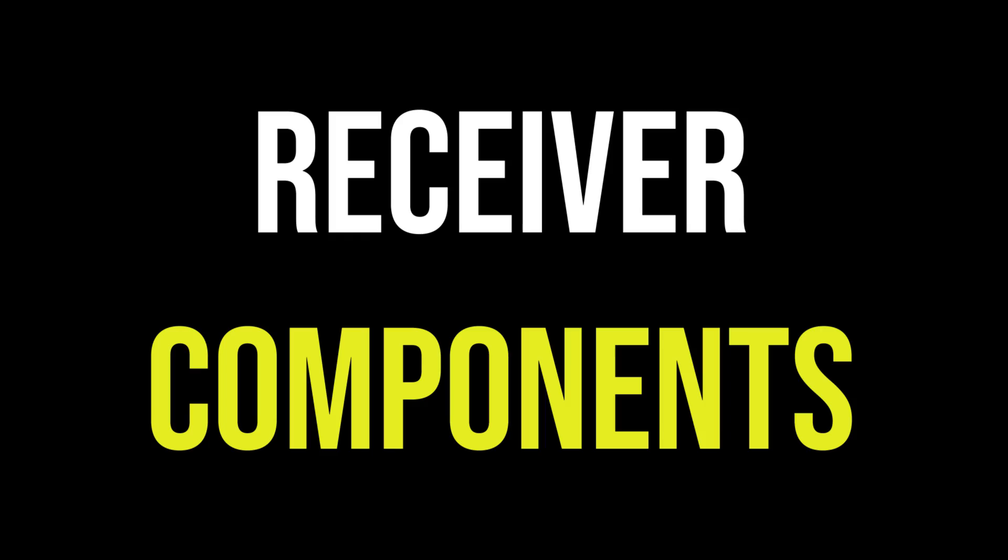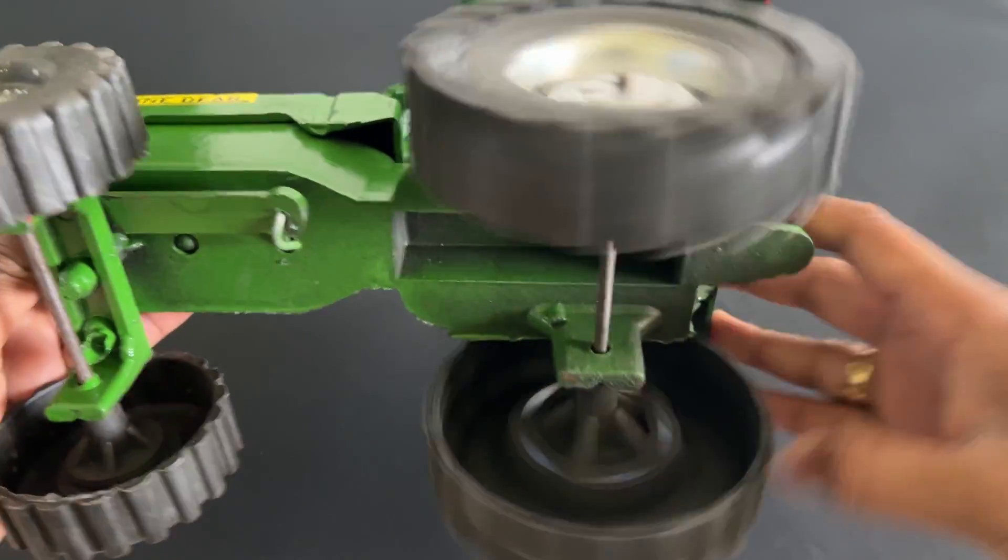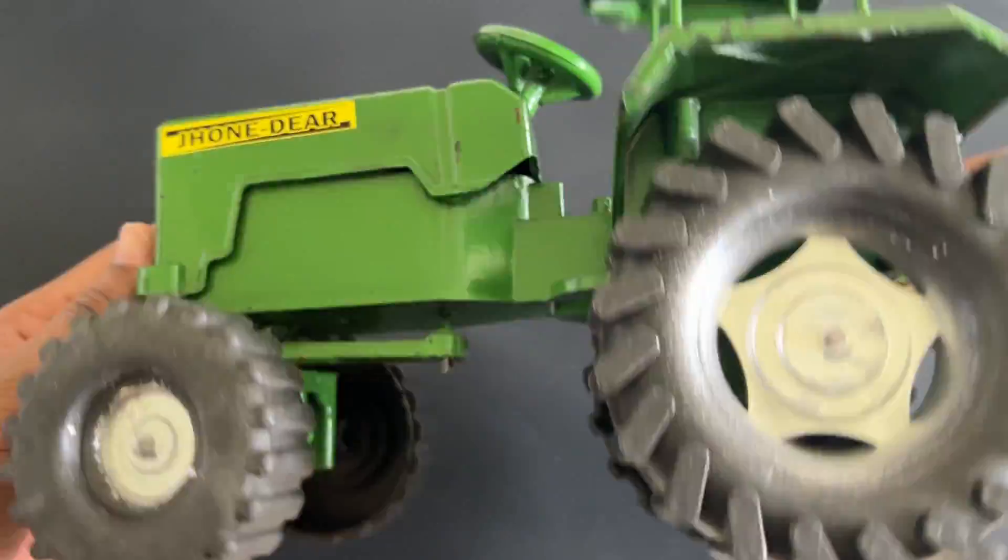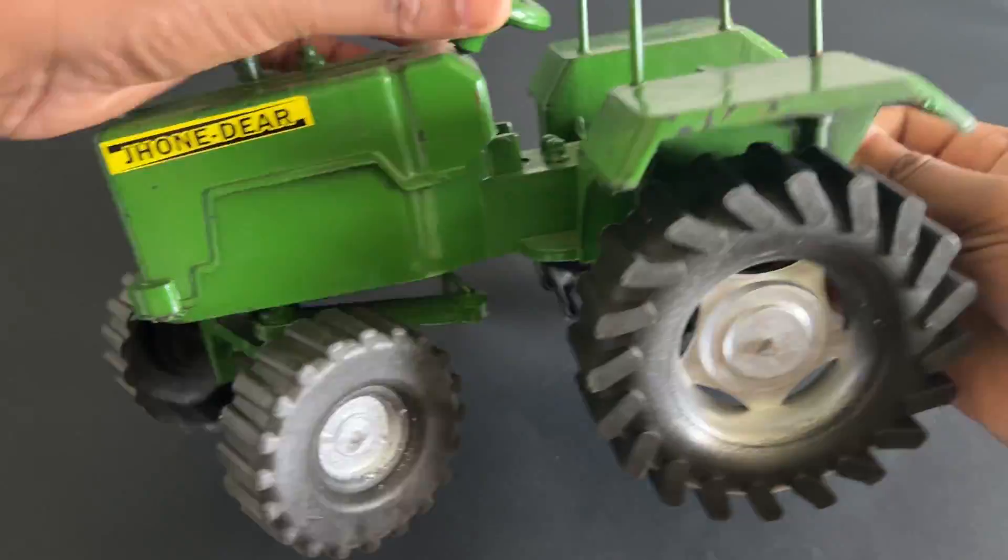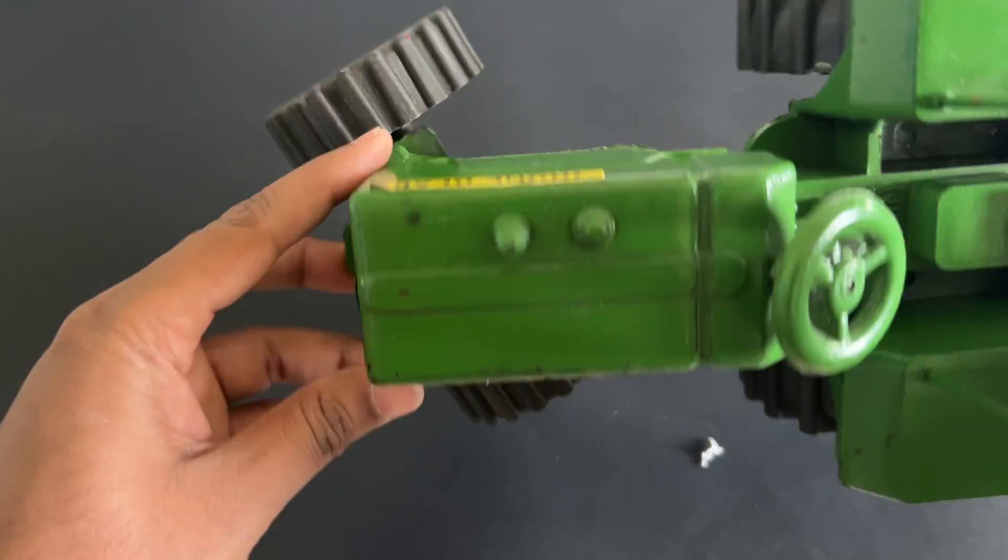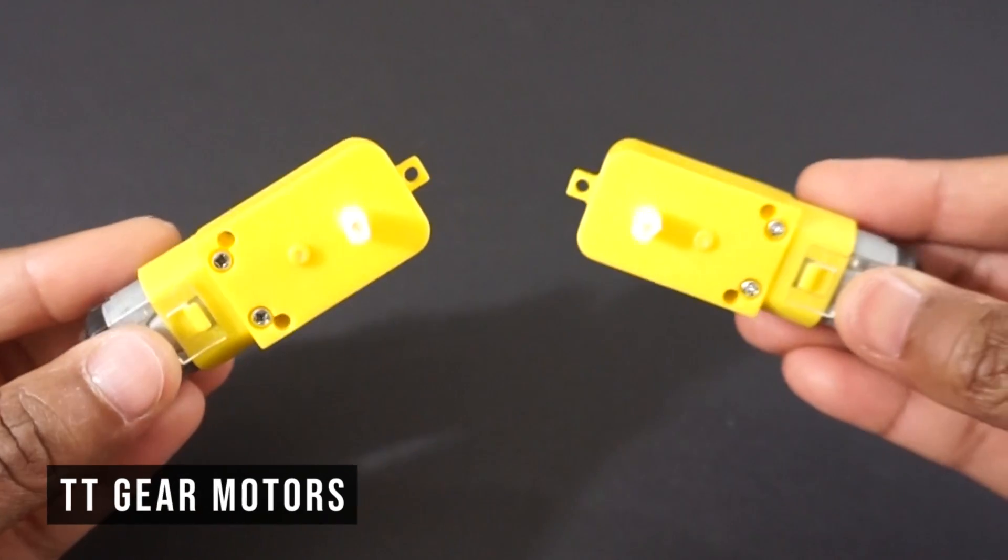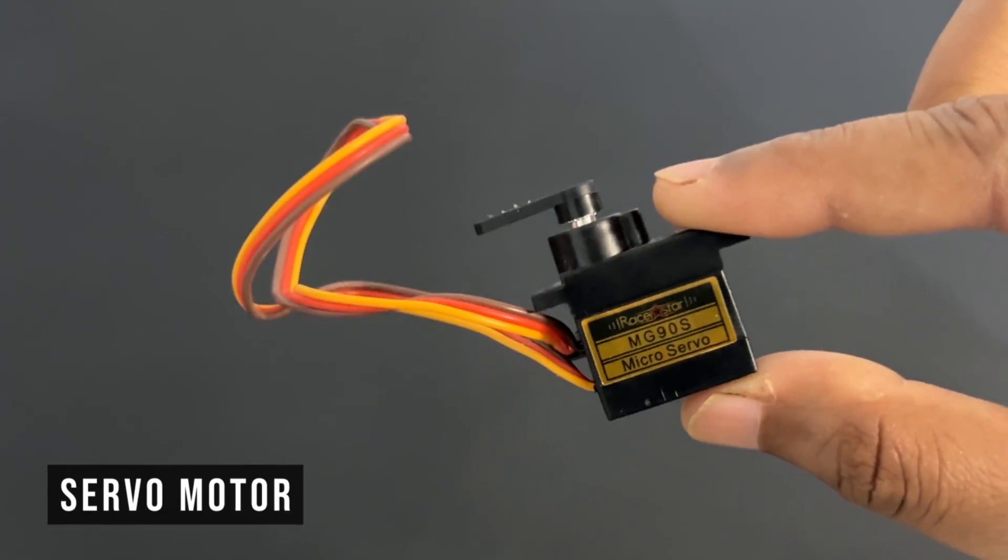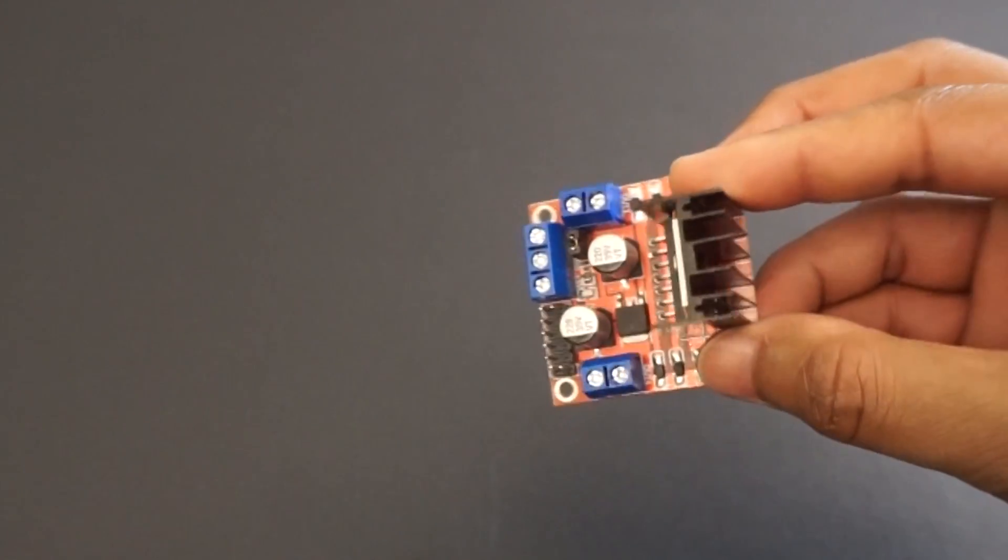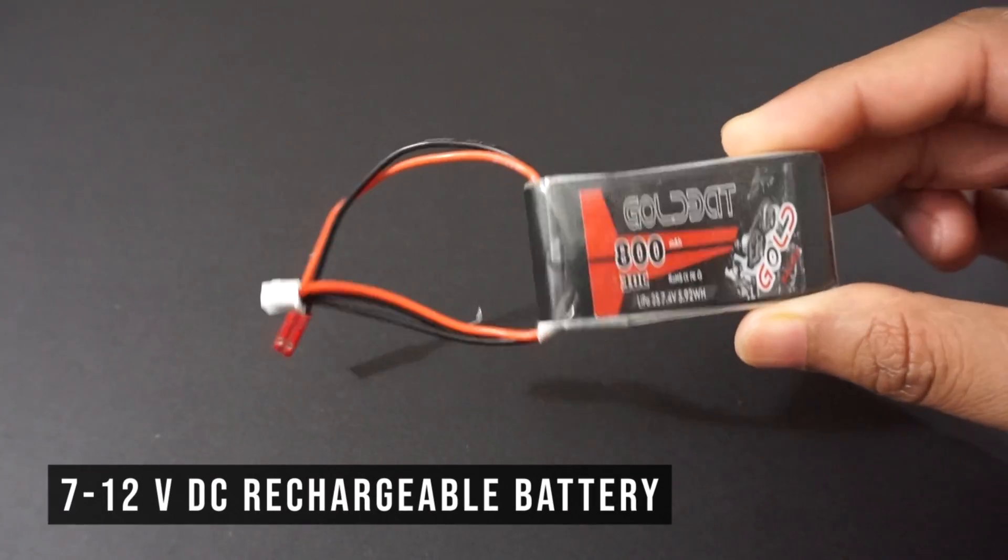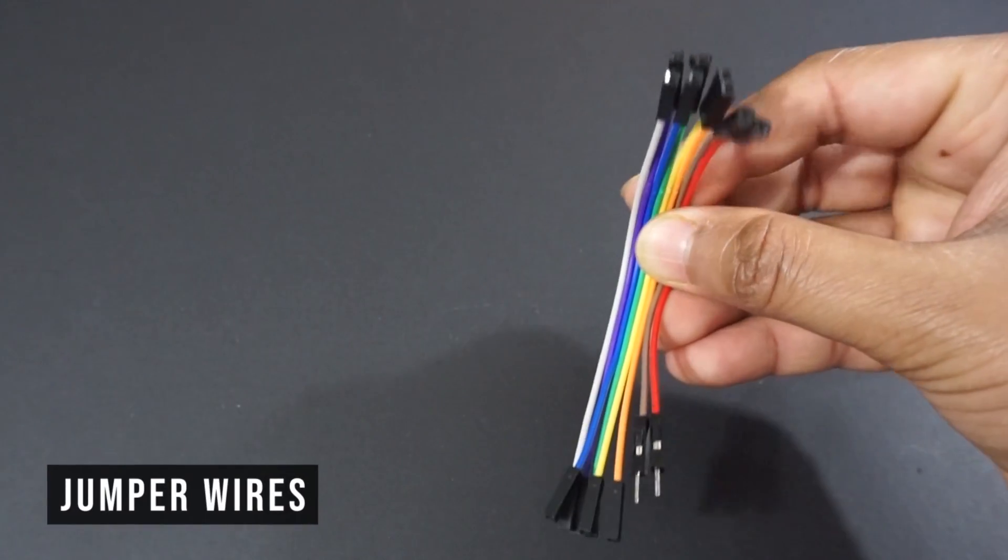Now let's take a look at receiver. We will need tractor. We will also need ESP32 module, TT gear motors, servo motor, we will use MG90 servo motor, L298N motor driver module, 7 to 12 volt DC battery, in our case LiPo 2S battery, double sided tape, and few jumper wires.